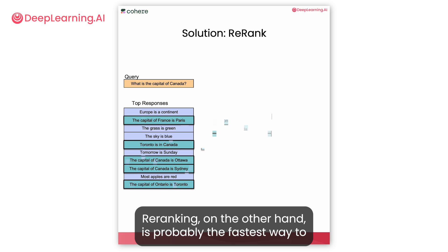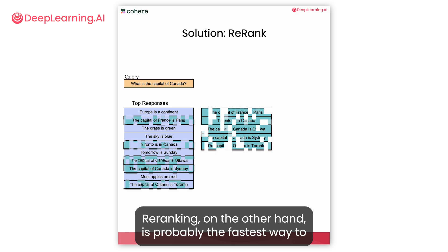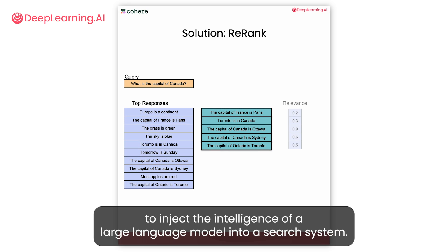Re-ranking, on the other hand, is probably the fastest way to inject the intelligence of a large language model into a search system.